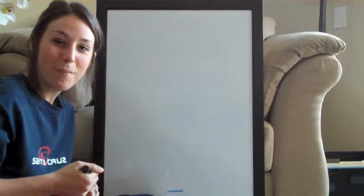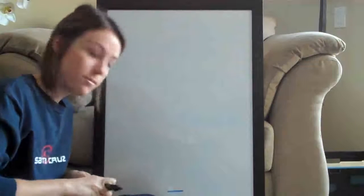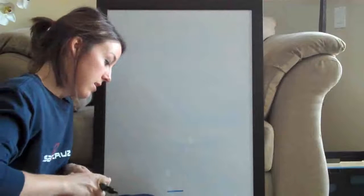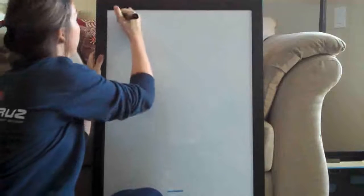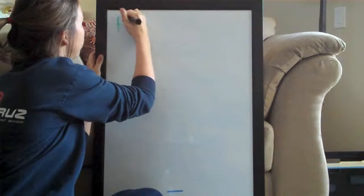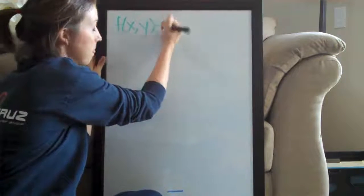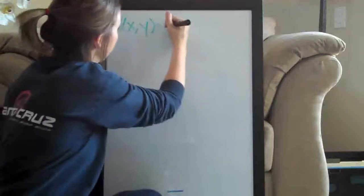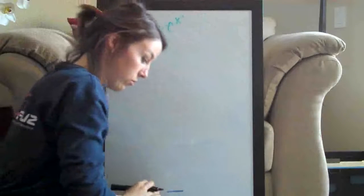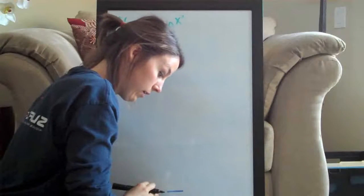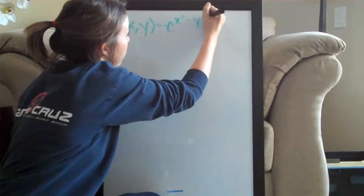Hi everyone, welcome back. We're doing another linear approximation problem today. Our function looks like this: f of x, y equals e to the quantity x squared minus y to the fourth.